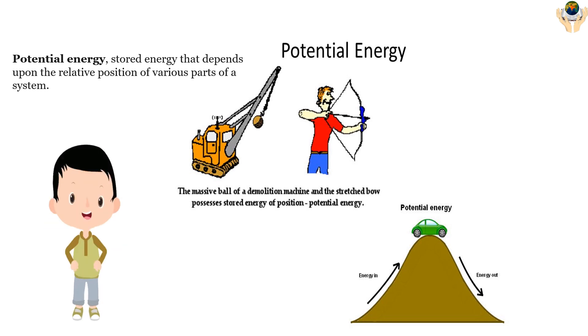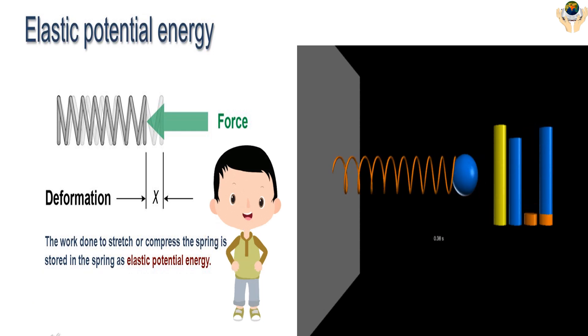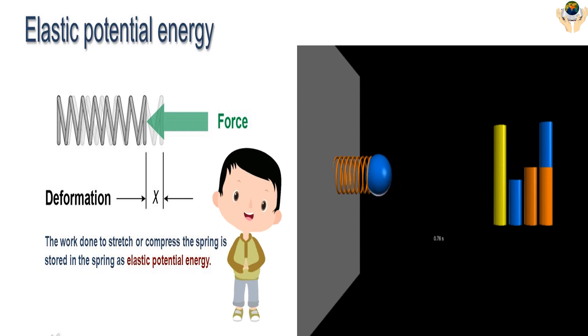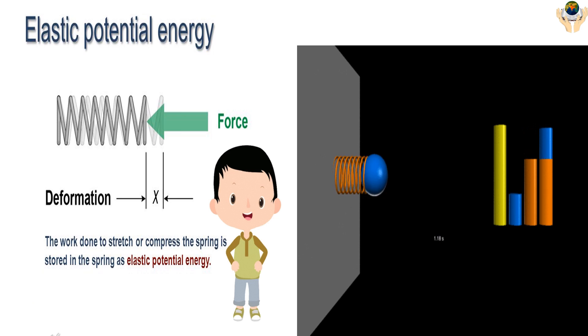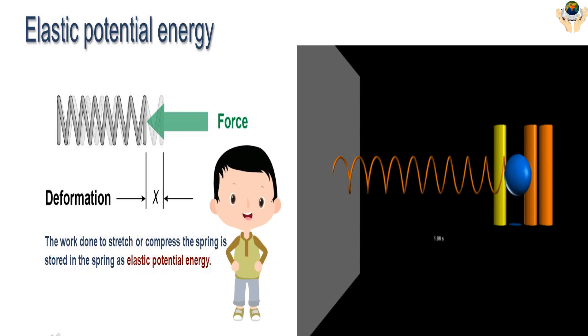Elastic potential energy. The spring is the best example for elastic potential energy. The work done to stretch or compress the spring is stored in the spring as elastic potential energy.